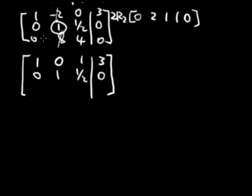And then here, for this 8, I'm going to take row 2 times negative 8 in order to get rid of the 8. So negative 8 times row 2 is 0, negative 8, negative 4 and 0. Now I add these two side by side. So it's going to be 0, 0, 0, 0.